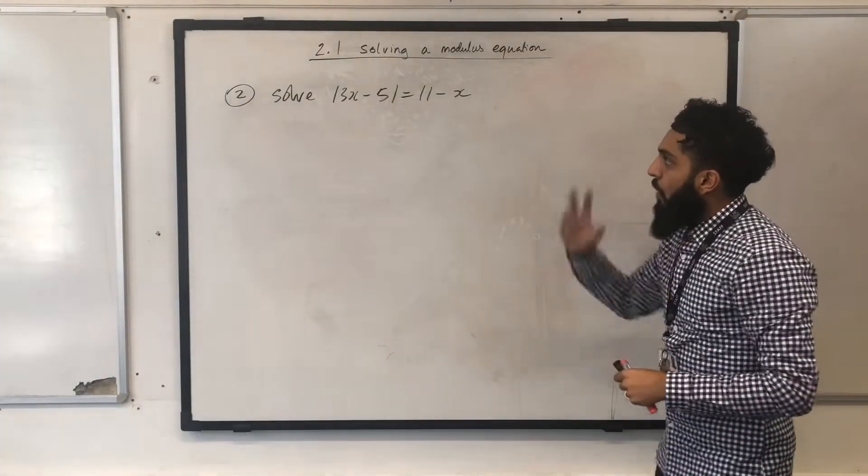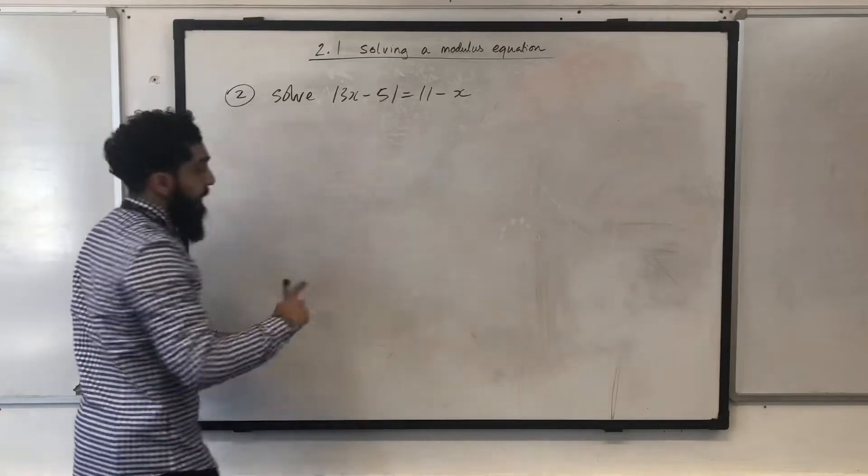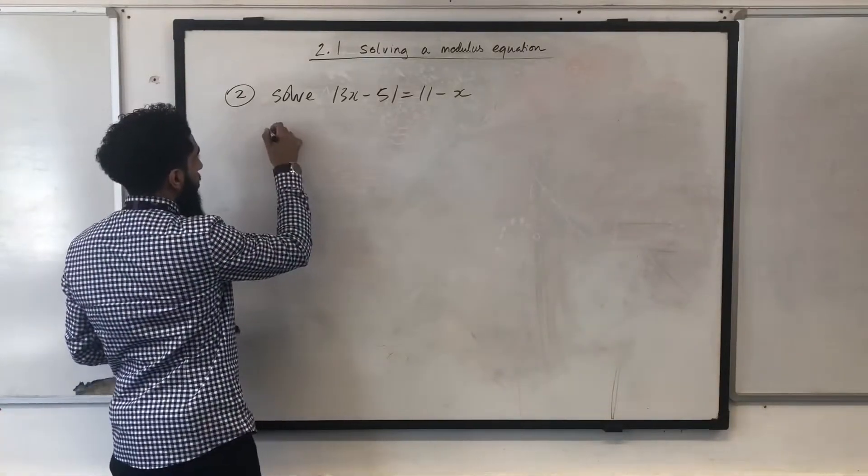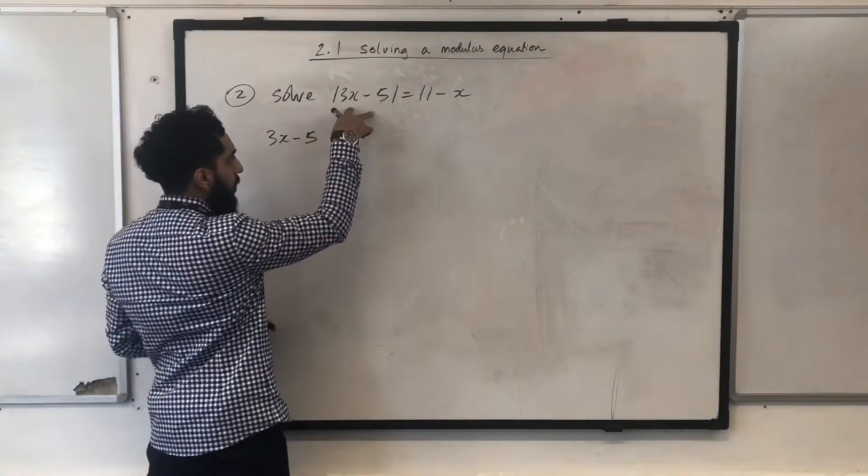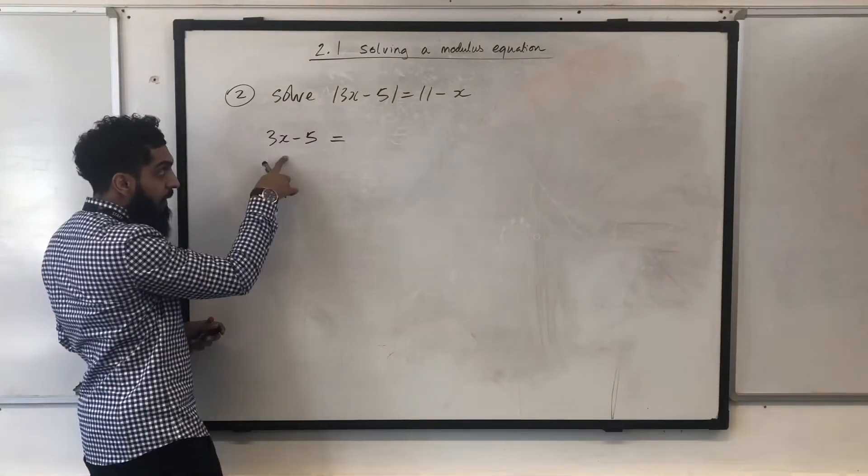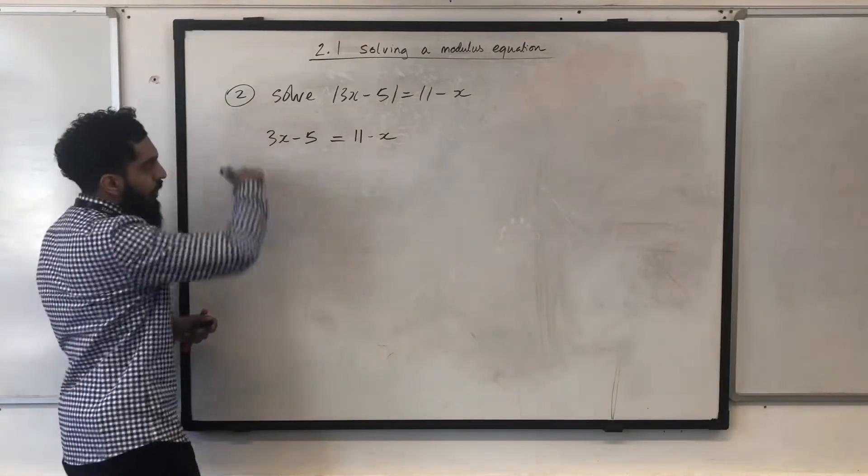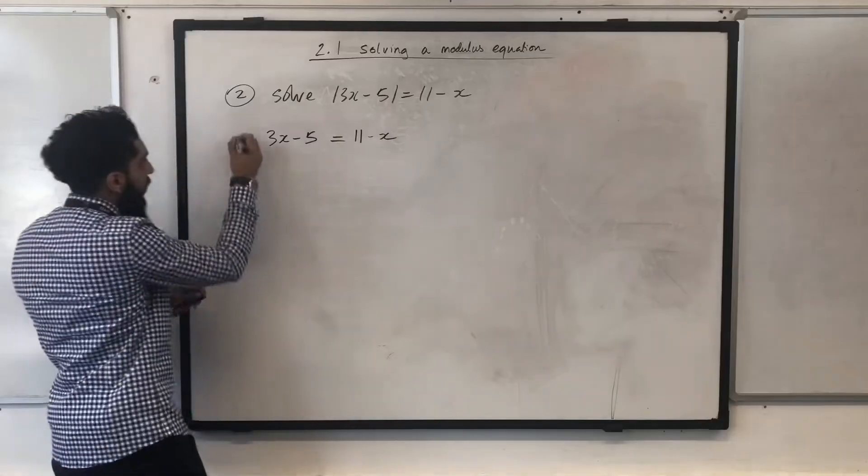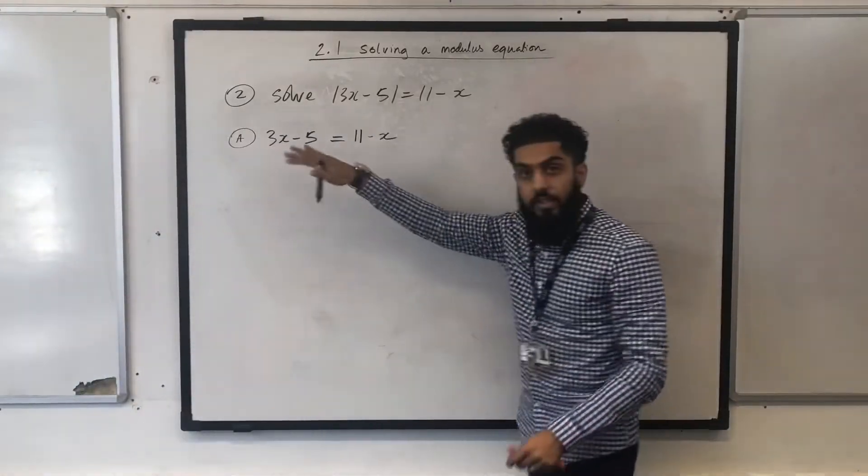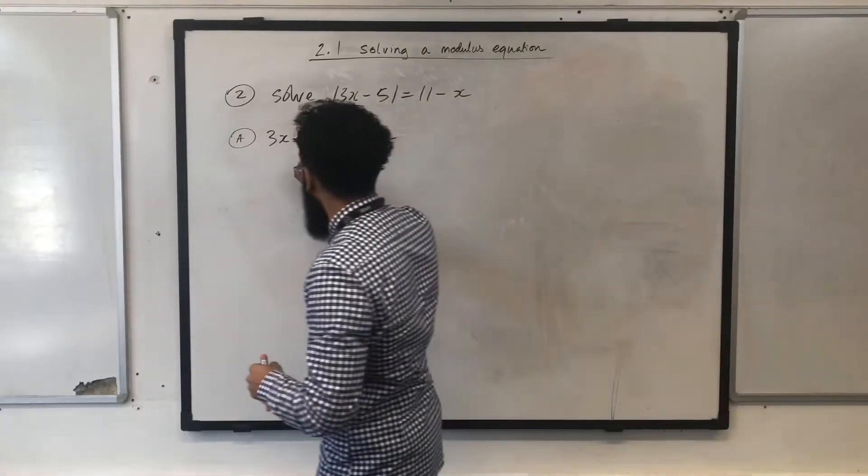We can first form two equations from this modulus equation. The first equation is just 3x minus 5, whatever we have inside the modulus. So, it's 3x minus 5 equal to 11 minus x. You just solve this equation as normal. Before I solve it, I'm going to call it equation A. The solution to this particular equation would just be x equal 4.